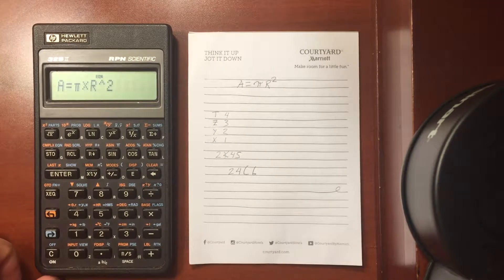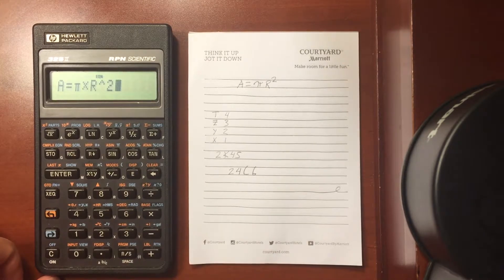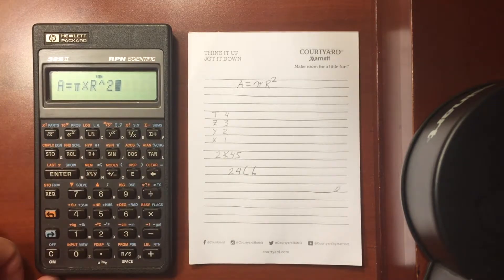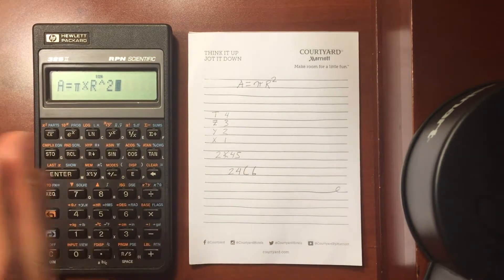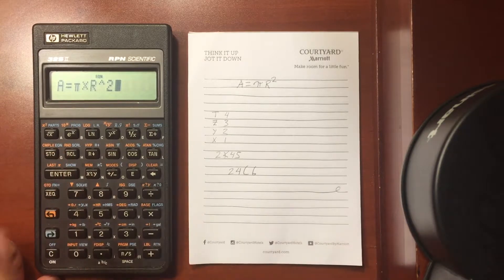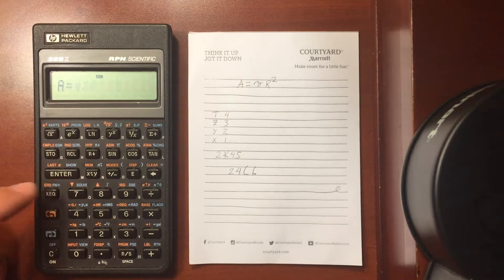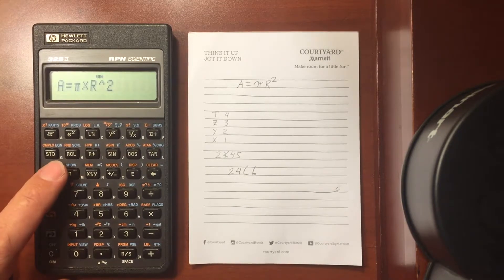Once I have it entered, I can edit it by hitting the backspace button, and then I can backspace to the spot that I want to edit. Unfortunately, you can't edit a single character. You have to delete from right to left until you get to the spot you want to edit. So there's my function.